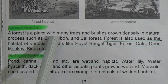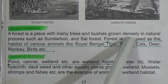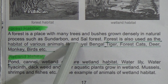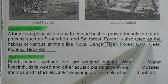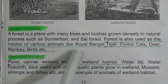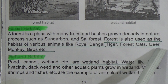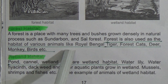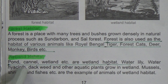This is forest habitat and this is wetland habitat. A forest is a place with many trees and bushes grown densely in a natural process, such as Sundarbans and Sal forest. The forest is also used as the habitat of various animals like the Royal Bengal Tiger, forest cats, deer, monkeys, birds, etc. — underline this line.